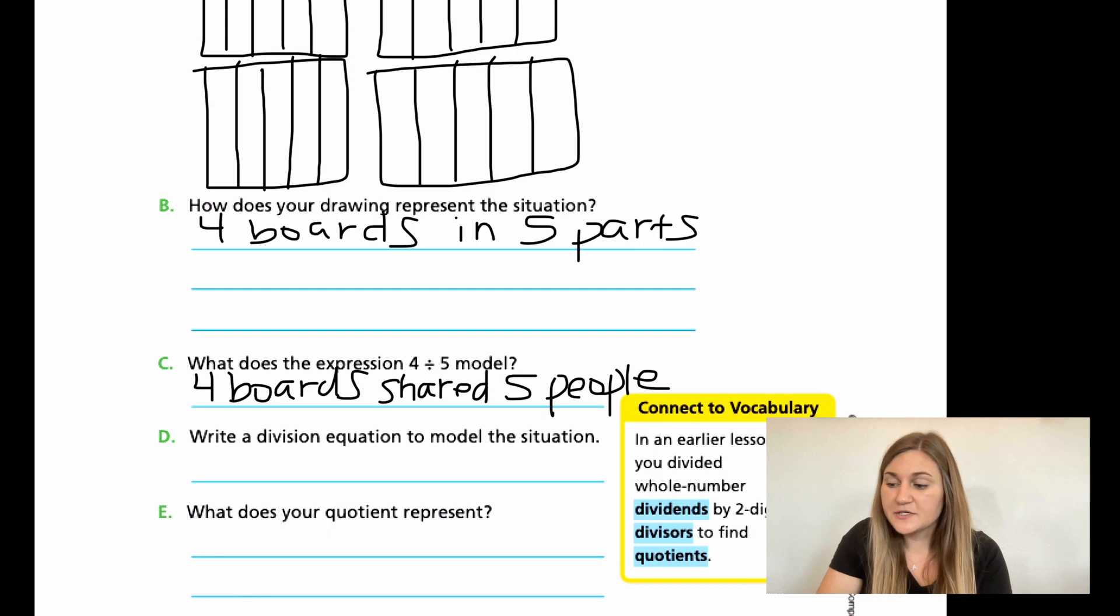And then for D, write a division equation to model the situation. Well, they already gave us that division problem, right? It's that four boards divided by five. So my division equation is going to be four divided by five, but it's asking for an equation. So we do have to have an equal sign here. So what is four divided by five? Well, it's also a fraction, right? Because we're dealing with fractions here. So four divided by five, remember, instead of divide by with the whole numbers, just instead of divide, just put a fraction line. So you can also say four divided by five, right? Divided by is still that fraction line. It's the same thing. So four divided by five is the same thing as four fifths.